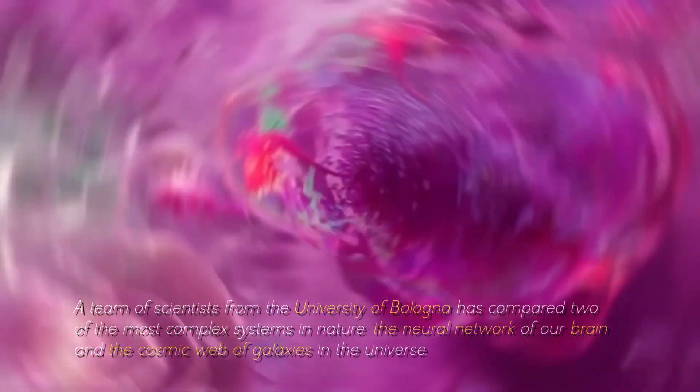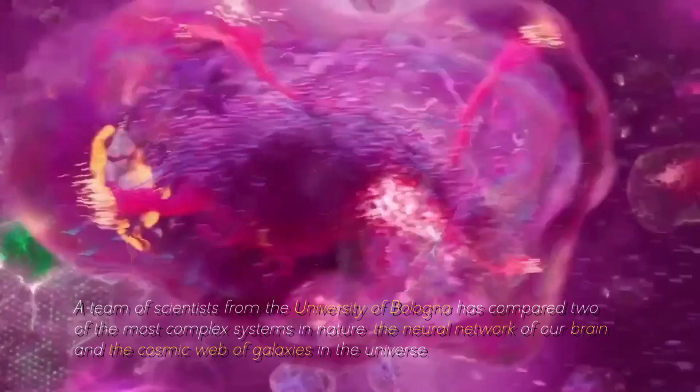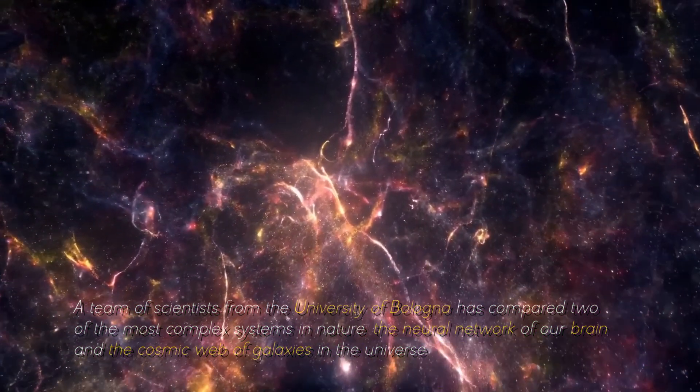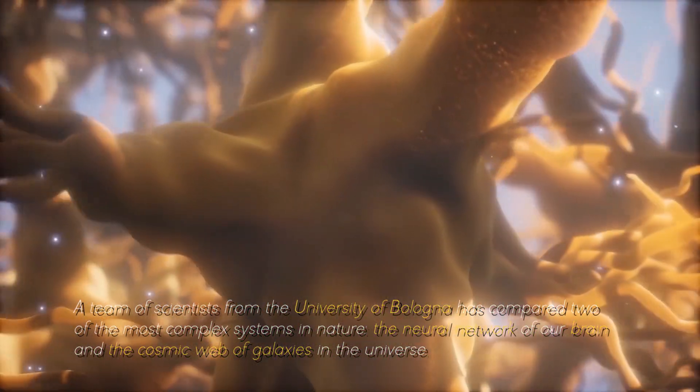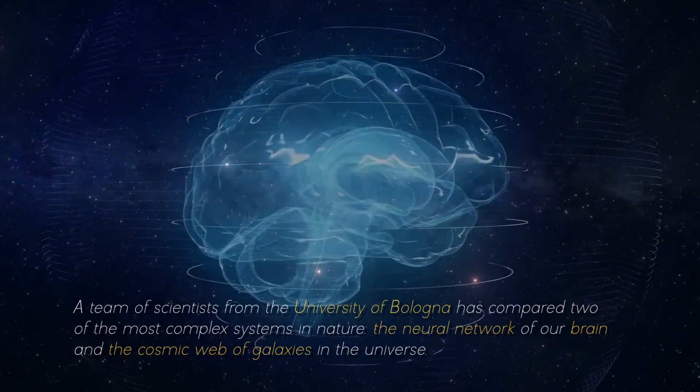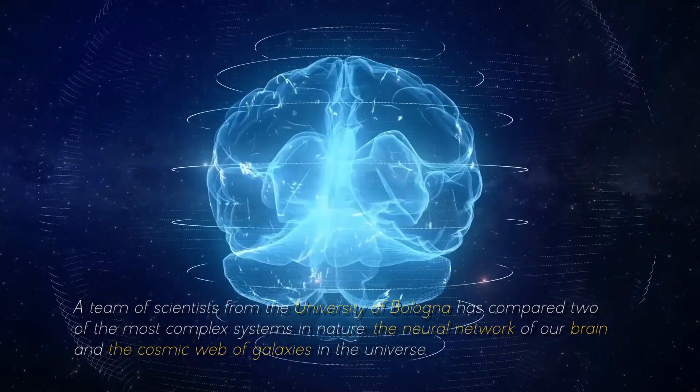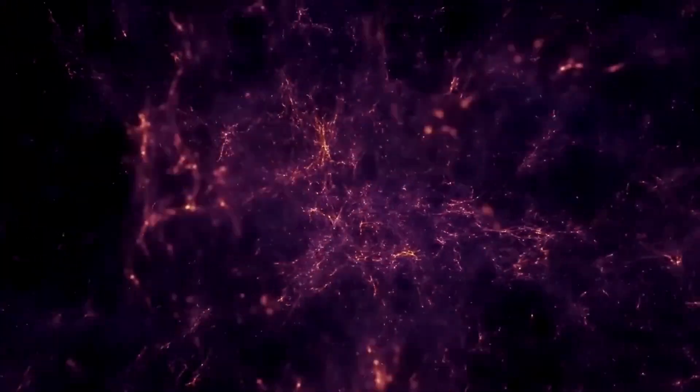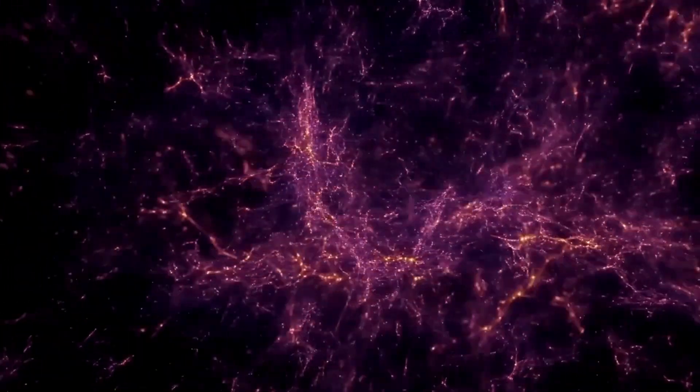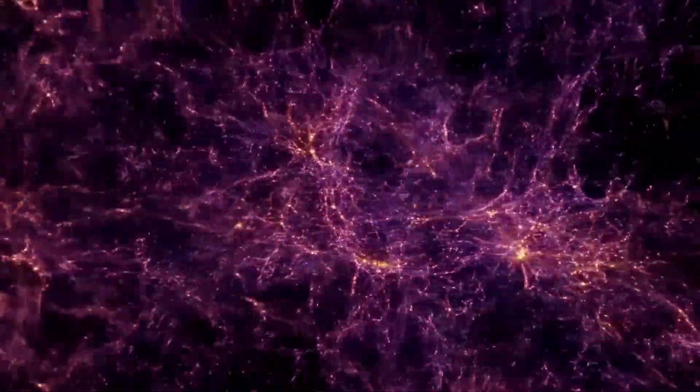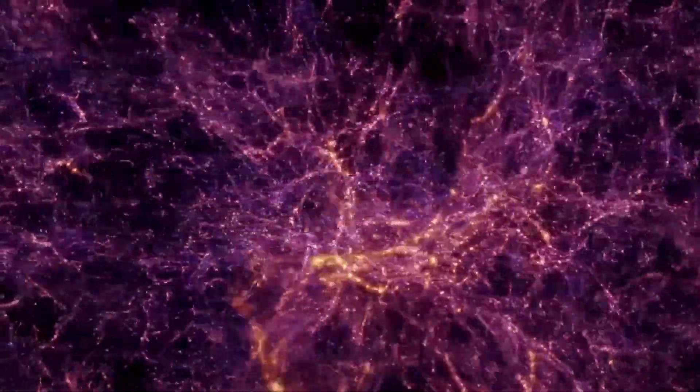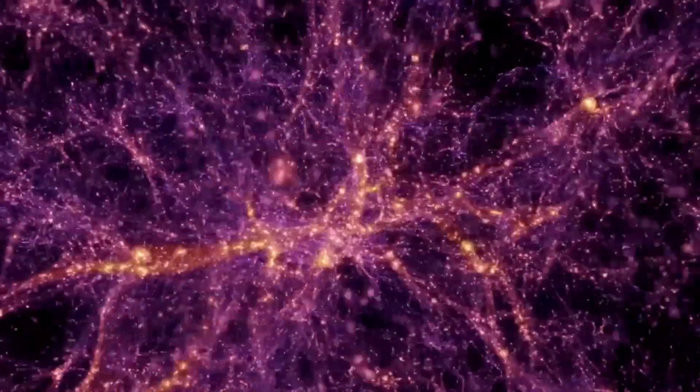A team of scientists from the University of Bologna has compared two of the most complex systems in nature, the neural network of our brain and the cosmic web of galaxies in the universe. What did they discover? That they are incredibly similar. And not just as they look if we compare a human neuron with a cluster of galaxies. There's more.